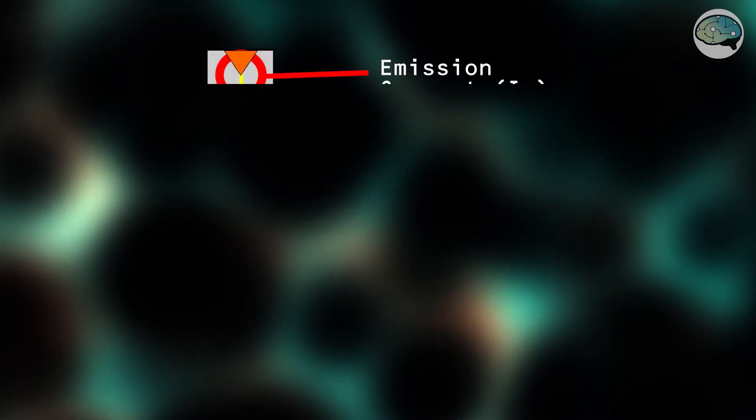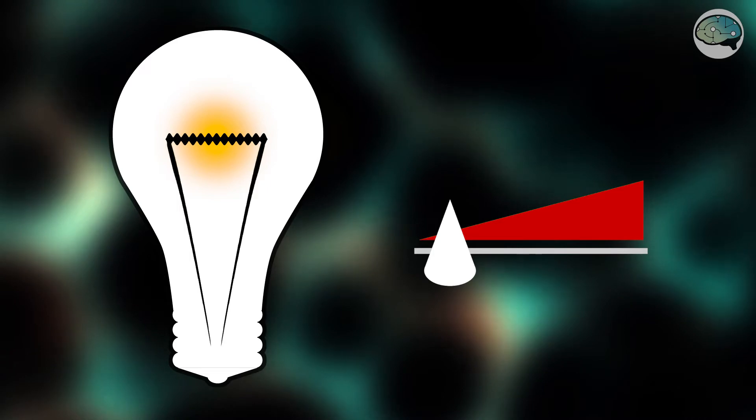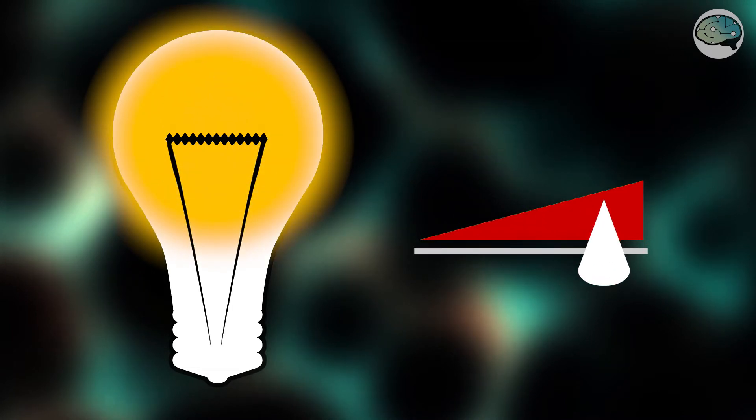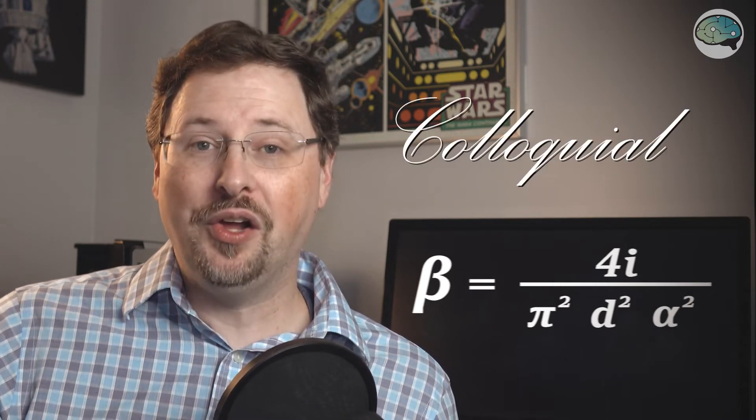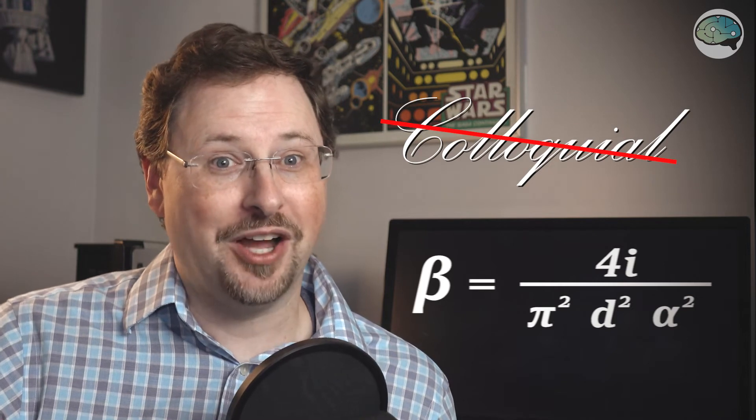Whether it's emission current or probe current, we're only talking about the total number of electrons traveling through those areas of the microscope. So what is brightness, and why is it confused with current? Consider a light bulb: at low current it puts out little light, but pump more electricity through and the filament is brighter. It's understandable to think the same thing happens in the electron microscope — more current equals more brightness. But that's only true if we use 'brightness' in the casual sense, which is not what we mean in electron microscopy. Here, brightness describes a very specific function of the electron beam.